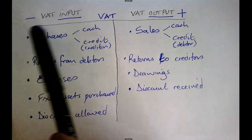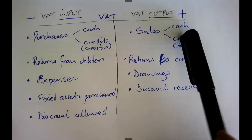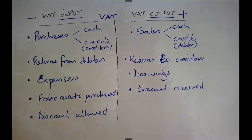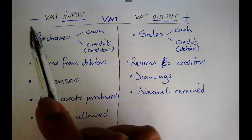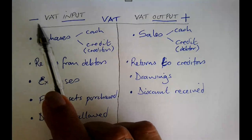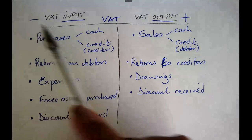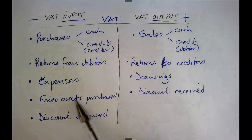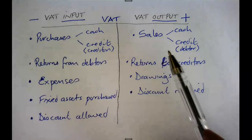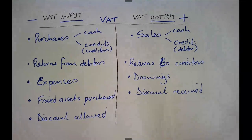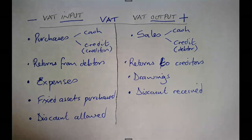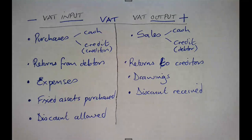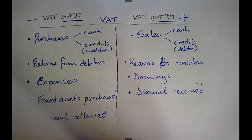My output makes the amount I owe to SARS more. My input makes what I owe to SARS less because I can claim it back. Based on that, I argue whether items are flowing in or out. Once I know my input and my output, I can look at this question and identify what is input and what is output.